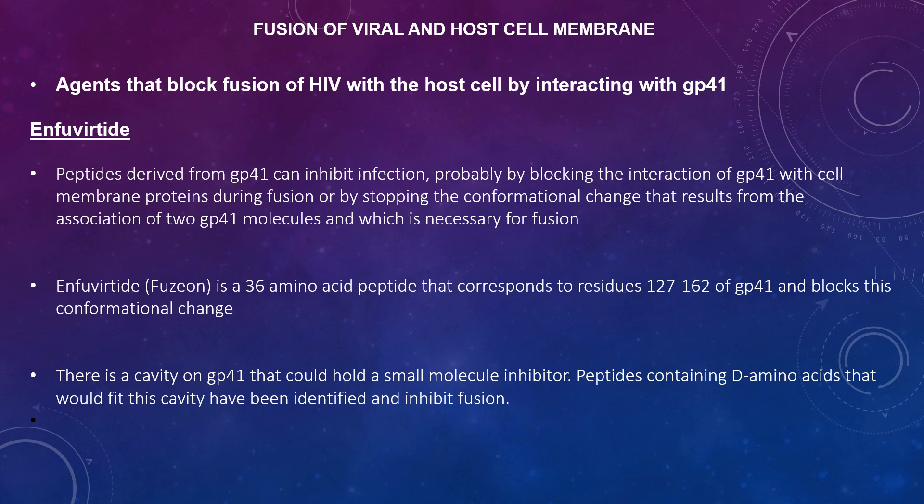This results from the association of two GP41 molecules, which is necessary for fusion. This is also known as a 36 amino acid peptide that corresponds to residues 127–162 of GP41 and blocks this conformational change. There is a cavity on GP41 that could hold a small molecule inhibitor. Peptides containing D-amino acids that would fit this cavity have been identified and can inhibit fusion.